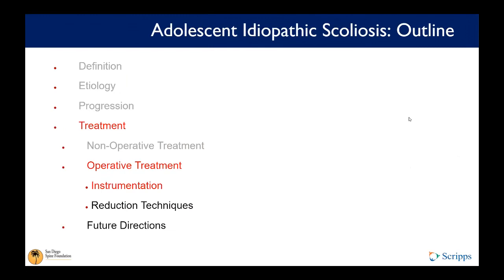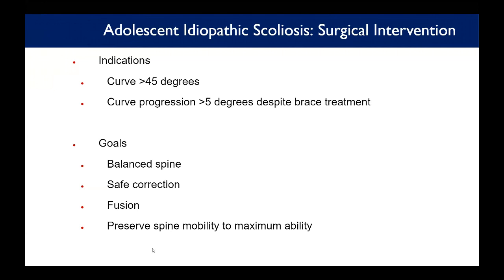For surgical intervention, the indications include curves greater than 45–55 degrees (depending on context), and curve progression greater than 5 degrees despite brace treatment — though that's a soft number. Those are not 'or' indications. Goals of surgery include a balanced spine, safe correction, solid fusion, and preserving motion above and below the fusion.